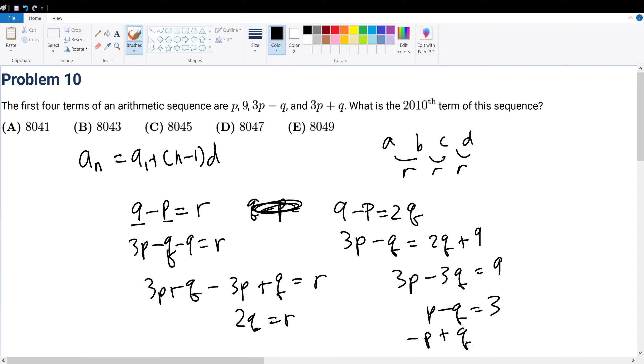That's negative p plus 9. My handwriting is so bad. Let's do that again.